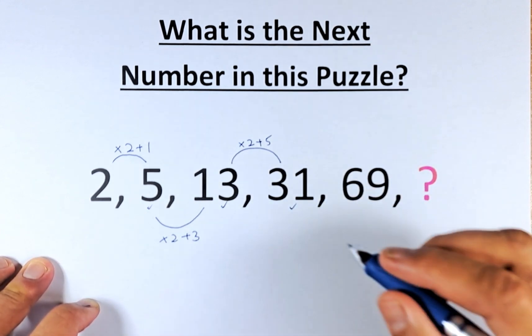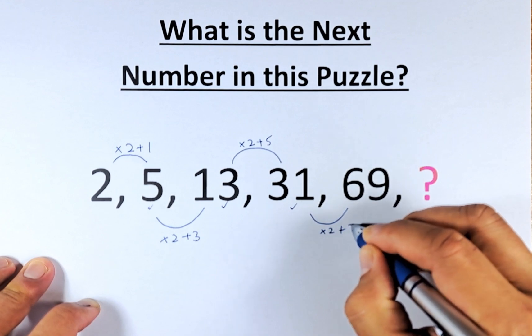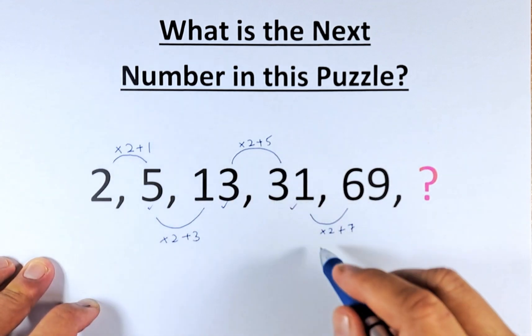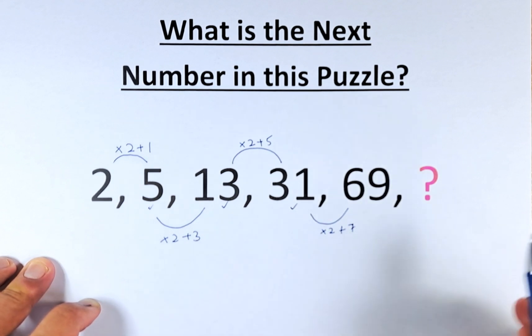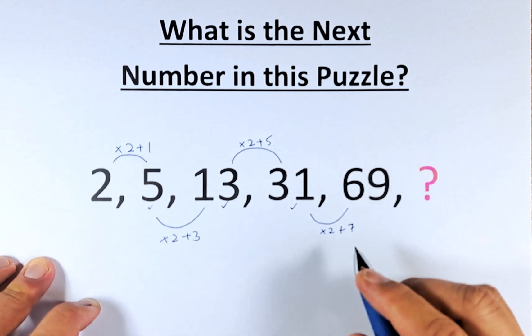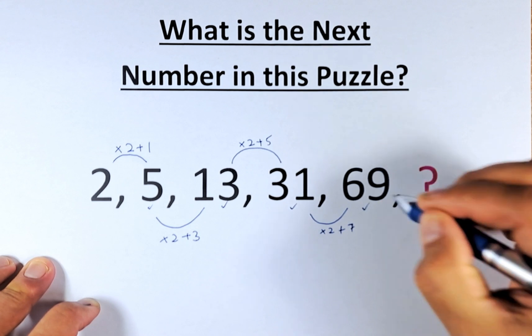And now you know the drill. It's going to be times 2 plus 7 because you're going to multiply by 2 all the while and then you're going to add by 1, 3, 5, 7. So 31 times 2 is going to be 62 plus 7. That will give us 69.